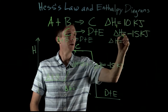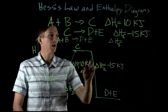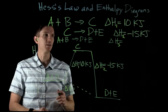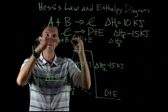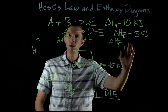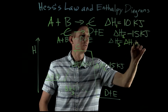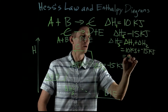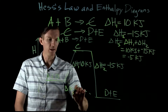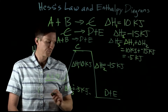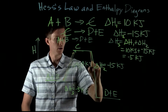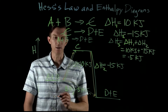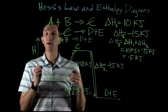Our enthalpy change for reaction 3 — the direct path — equals the sum of reactions 1 and 2. When we add those two reactions together, C cancels out, leaving A and B going to D plus E. We add the enthalpies: 10 kilojoules plus negative 15 kilojoules equals negative 5 kilojoules. So the overall enthalpy change is negative 5 kilojoules. The overall enthalpy change is the same no matter what the path — that's what Hess's Law states.